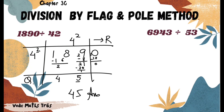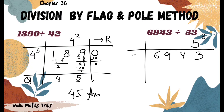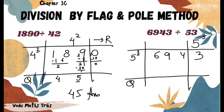Let's take another example to understand this concept better: 6943 divided by 53. Here we divide by 5 and take 3 as the flag. We write 6943 with divisor 5 and flag 3. Since there is a single digit in the flag, we leave one digit from the right and put a partition — this part will be the remainder part.